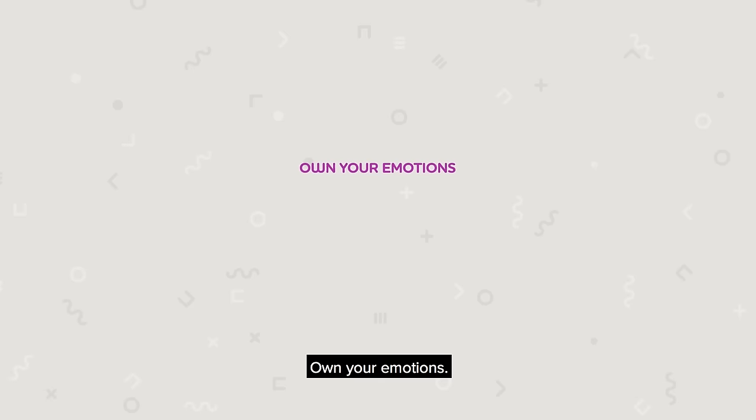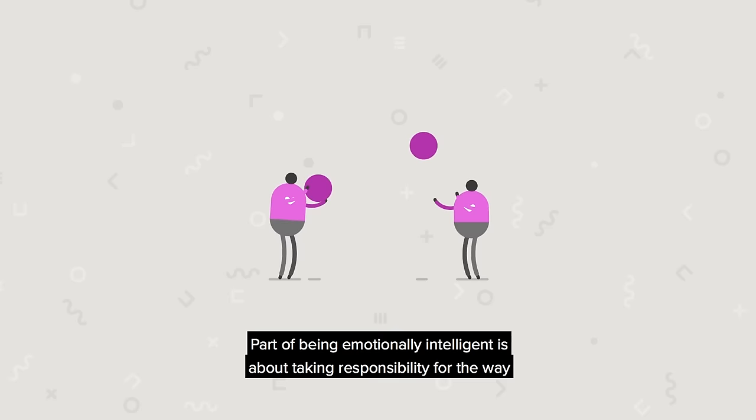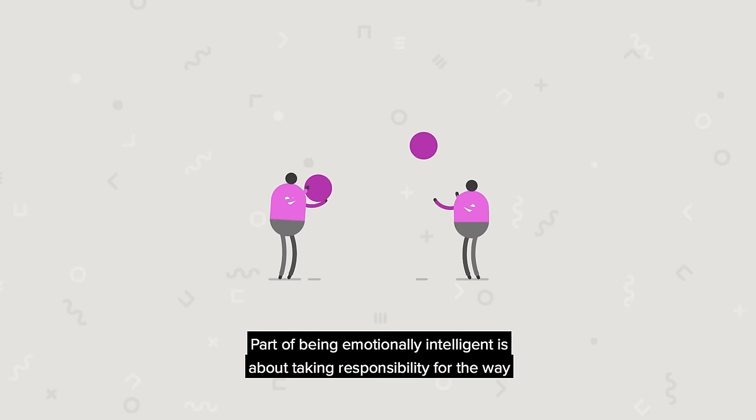Own your emotions. Part of being emotionally intelligent is about taking responsibility for the way you interact with others. If someone upsets you, pause and reflect on why their actions led you to feel that way.